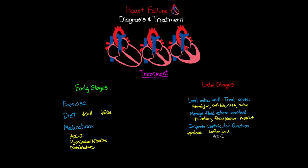We also want to give medications that reduce cardiac remodeling — the structural changes happening inside the heart. ACE inhibitors and beta blockers are the cornerstone of this therapy. We can also use aldosterone blocking agents and isosorbide/hydralazine combinations. Digoxin has been shown to be effective and was previously a primary treatment, but is now reserved mainly for patients who also have atrial fibrillation or atrial flutter.